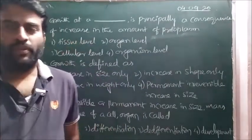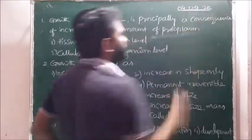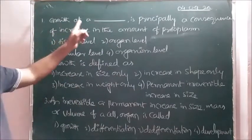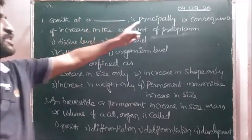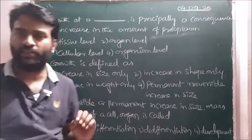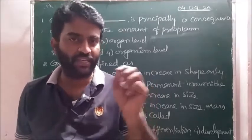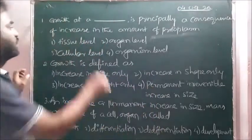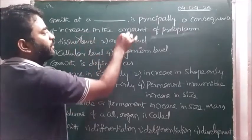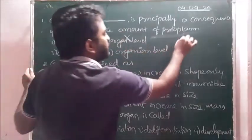Good morning, today we are going to discuss daily assignment 4th of September. First question: growth at a dash is principally a consequence of increase in the amount of protoplasm. Increase at cellular level is the textbook line. Hence, cellular level is correct. Tissue level wrong, organ level wrong, cellular level is correct. Answer key is three.